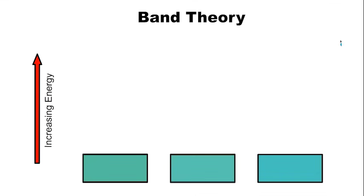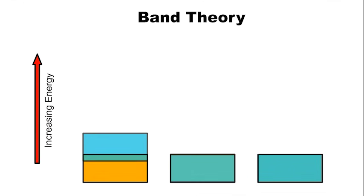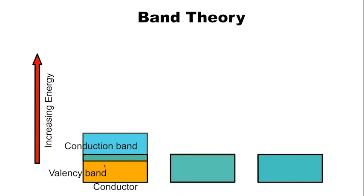Now let's talk about band theory. Imagine our valency and conduction bands represented by two boxes. In the case of a conductor, the conduction band overlaps the valency band. As you can see, energy increases as we go up. Because they overlap, any electrons that exist in the valency band are automatically in the conduction band — there is no gap for them to traverse in order to become conductors. In other words, the outermost electrons are free to conduct.